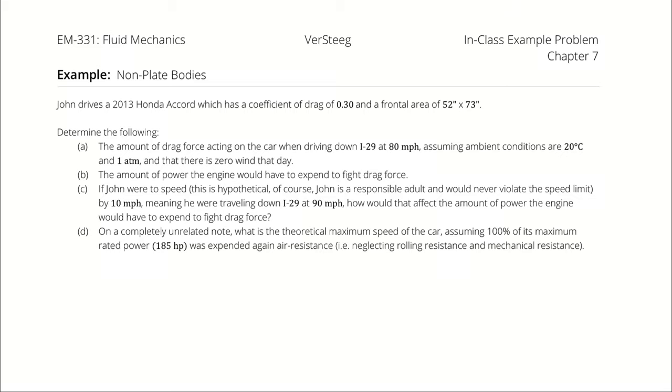John drives a 2013 Honda Accord, which has a coefficient of drag of 0.3 and a frontal area of 52 inches by 73 inches. Determine the amount of drag force acting on the car when driving down I-29 at 80 miles an hour, assuming ambient conditions are 20 degrees Celsius and one atmosphere and that there is zero wind that day.